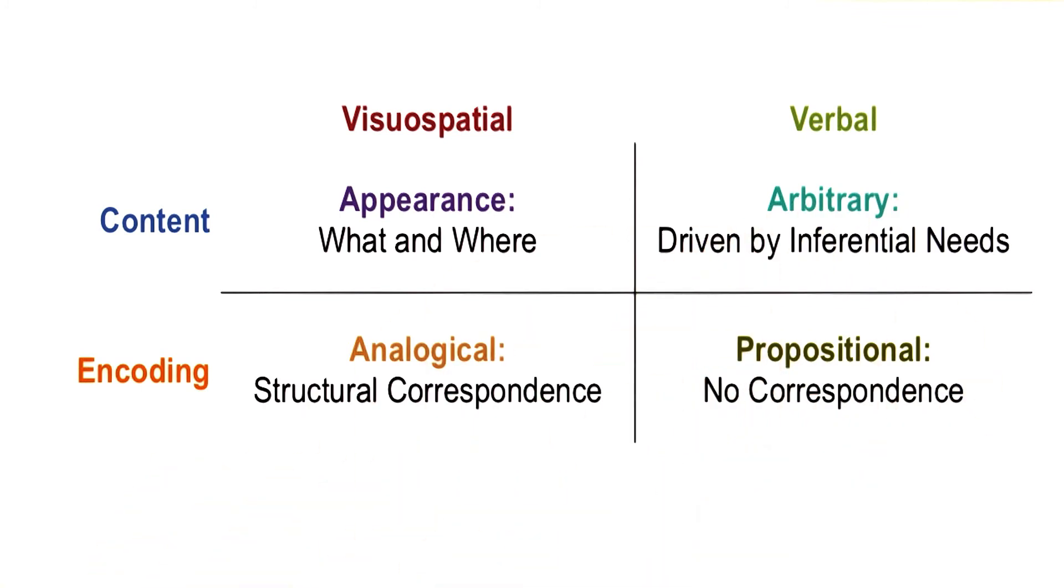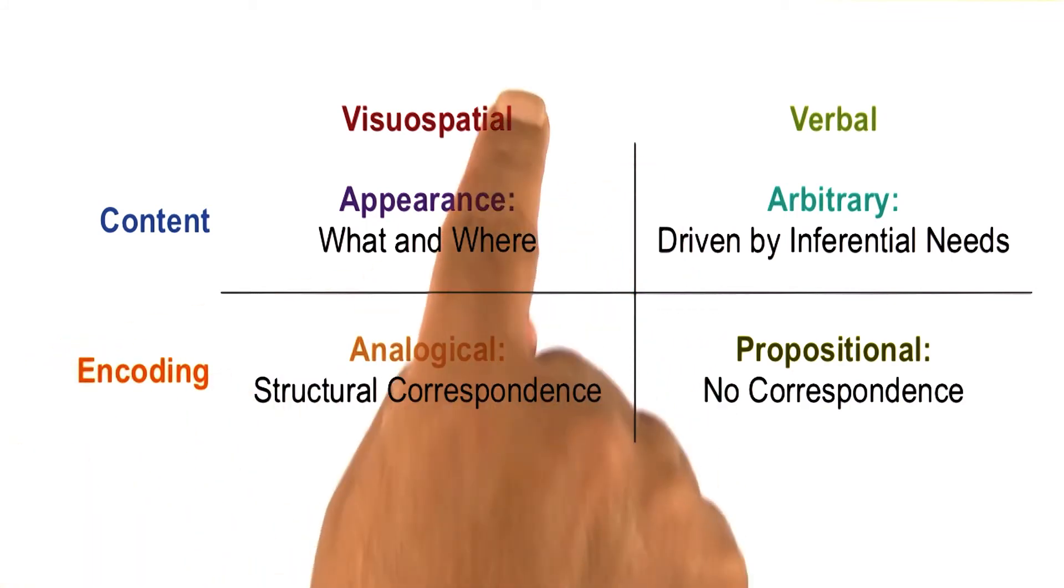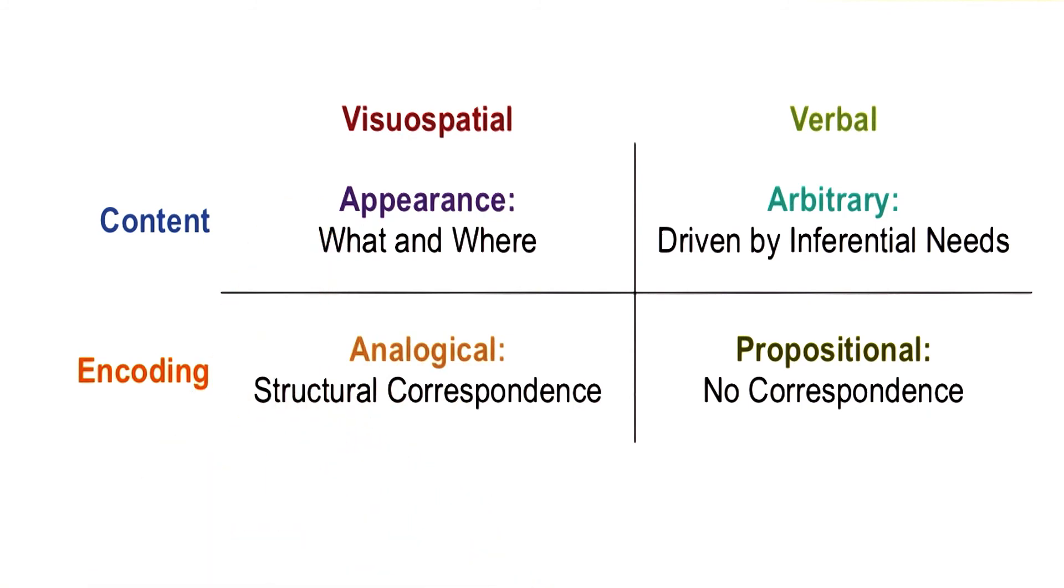In much of the course, we have dealt with the right hand side of this chart, with verbal knowledge and propositional representations. Part of the point of this lesson on visual-spatial knowledge and reasoning is that reasoning and knowledge can be visual-spatial and the representations can be analogical.